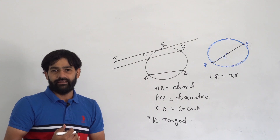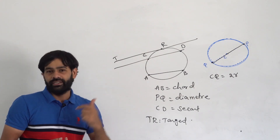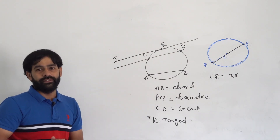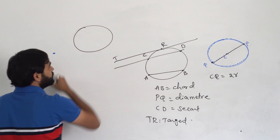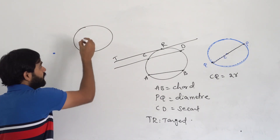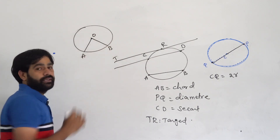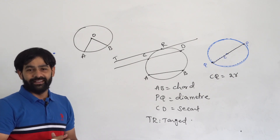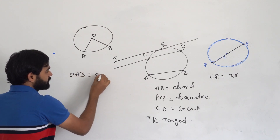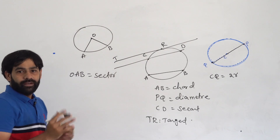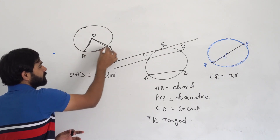Let us talk about the area of the sector, arc length, and related terms. Suppose I take a circle, mark its center O, and join it to any two points A and B on the circle. The figure formed is OAB. This figure OAB is called a sector. It is bounded by two radii, and the curved part between A and B is called the length of the arc.